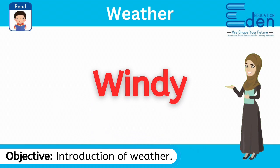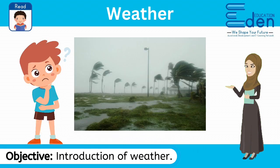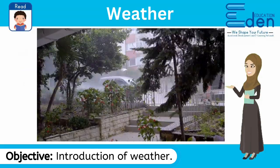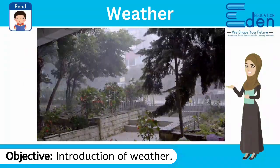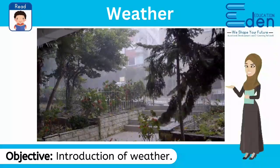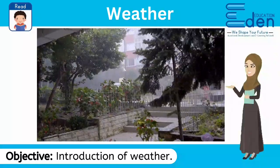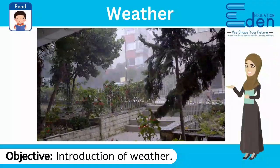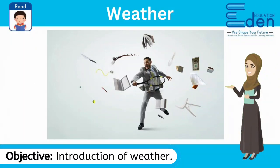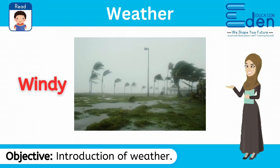Windy. Dear friends, look at the picture. What do you see? When normal air starts blowing fast with more pressure, then we call the weather windy. During windy weather, objects don't stay at their place and move here and there along the direction of the wind. So it's windy.